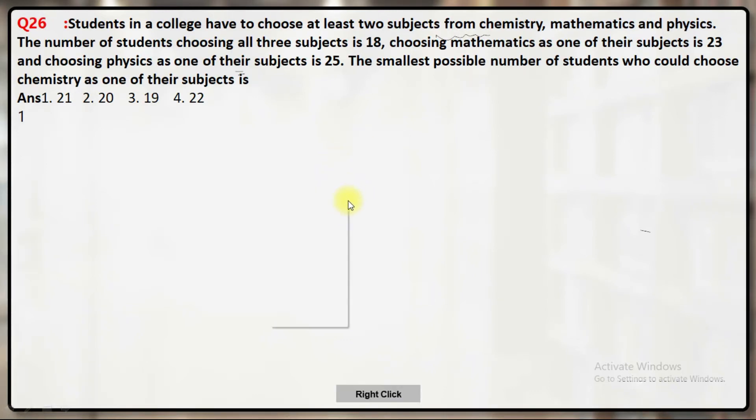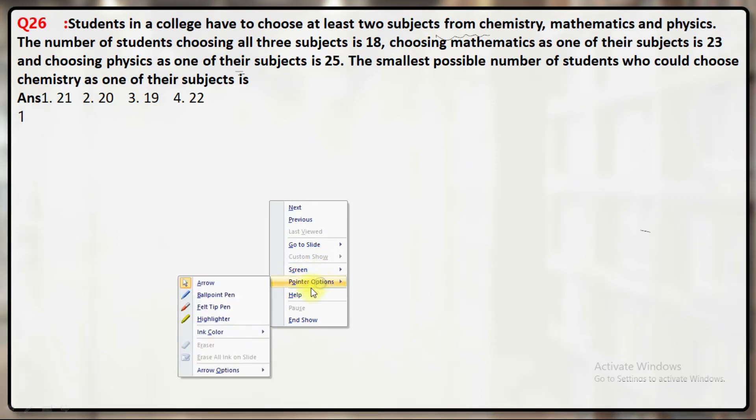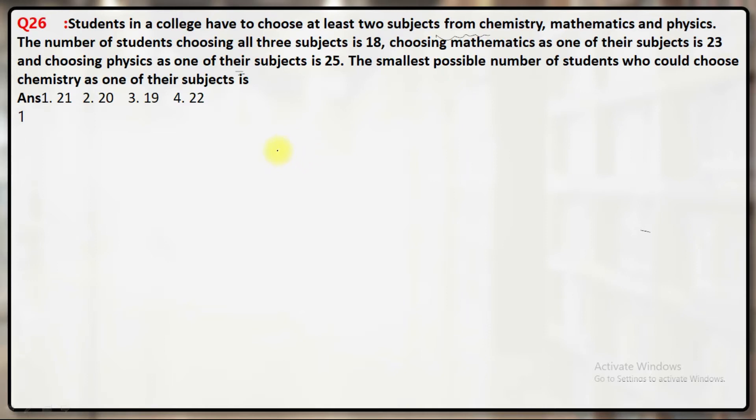This is a question based on Venn diagrams. Students in a college have to choose at least two subjects from chemistry, mathematics, and physics.